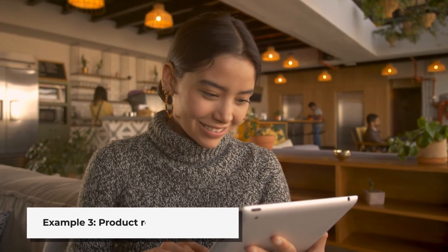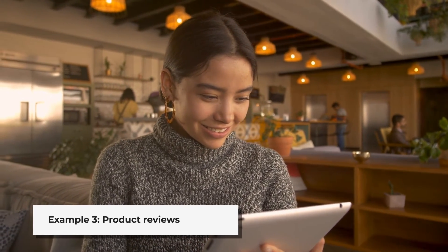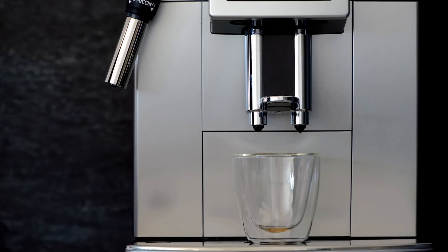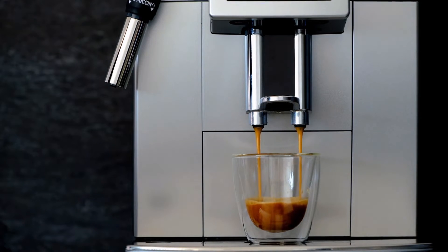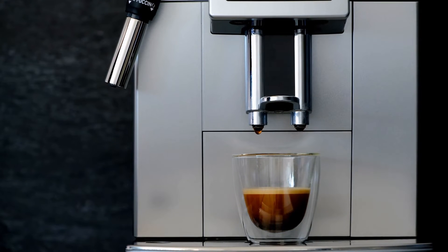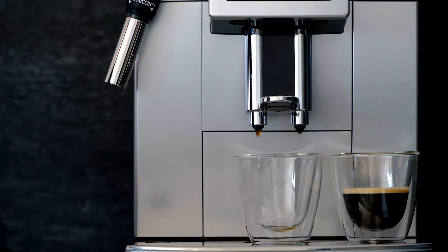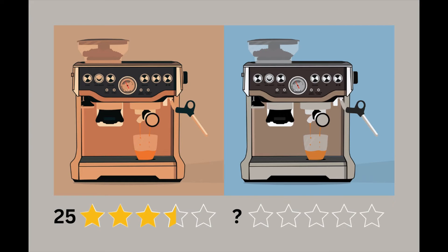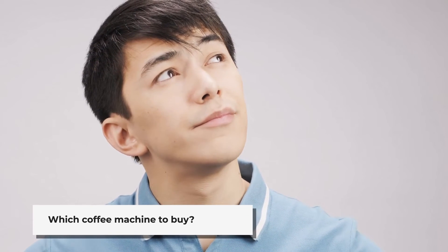Our next example is about how ambiguity in product reviews influences our purchasing decisions. Imagine you're interested in purchasing a new coffee machine. You've identified two models with similar features and the same price — Machine A and Machine B — and decide to check product reviews to help with your decision. For Machine A, you find lots of reviews, some positive and some negative, and judge that the machine is okay but not outstanding. For Machine B, despite searching for a long time, you can't find even a single review.